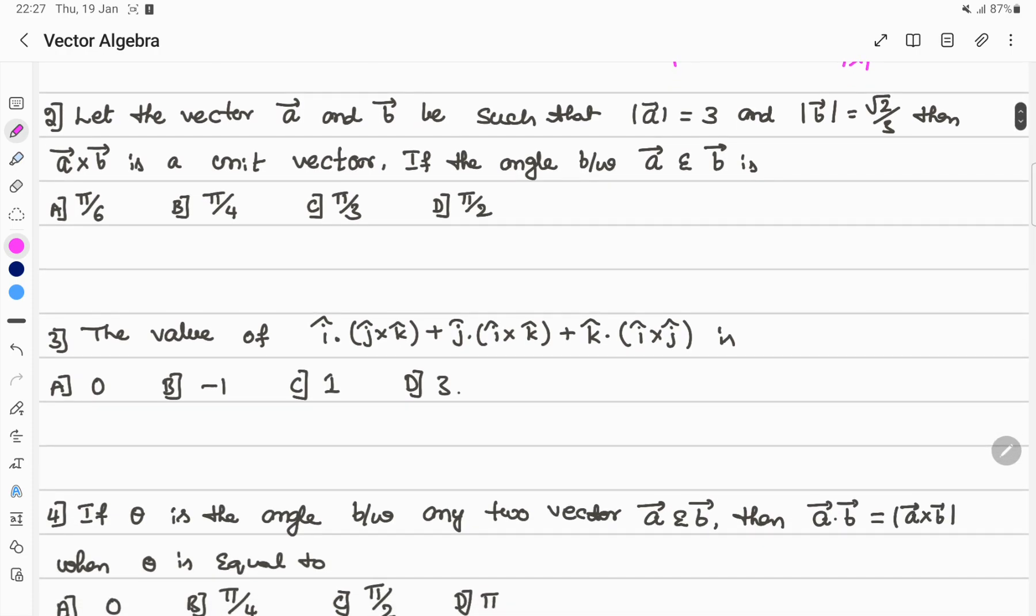Next question: let vectors a and b be such that magnitude of a is 3 and magnitude of b is 2 by root 3. Then a cross b is a unit vector. So here, magnitude of a cross b is given, which equals 1.